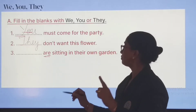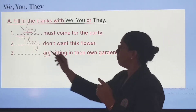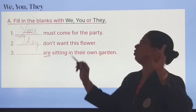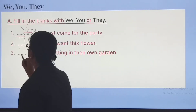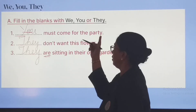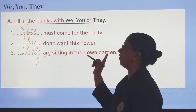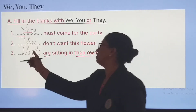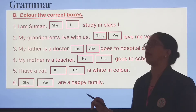We have two options: we or they. Let us try we — We are sitting in their own garden. But the sentence says 'their own garden', so it should be they — They are sitting in their own garden. So children: you must come for the party — use you. Don't want this flower — you can use we or they. Last one, because it says 'their own garden' — they are sitting in their own garden.